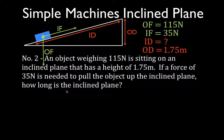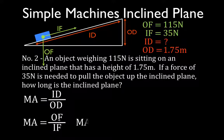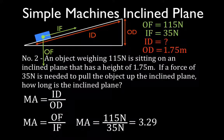Once again we have our two mechanical advantage equations with forces and distances. Before we can calculate the input distance, we have to calculate the mechanical advantage. In this case we don't know one of the distances, but we know both forces, so we're going to use the bottom equation. The mechanical advantage equals the output force 150 divided by 35, which tells us the mechanical advantage is 3.29.